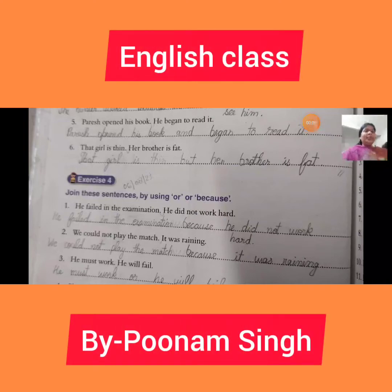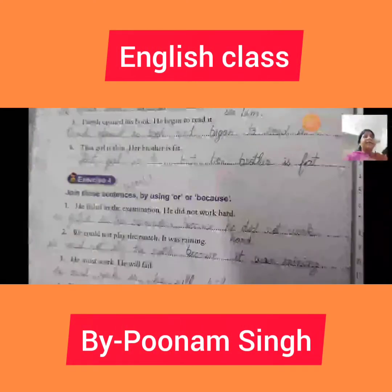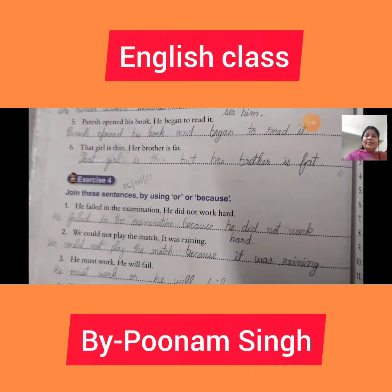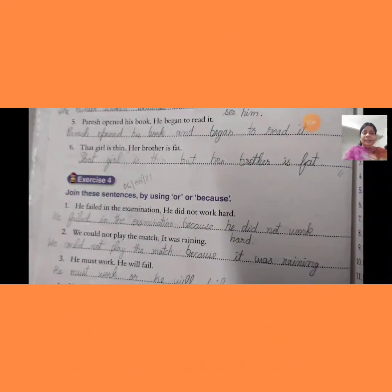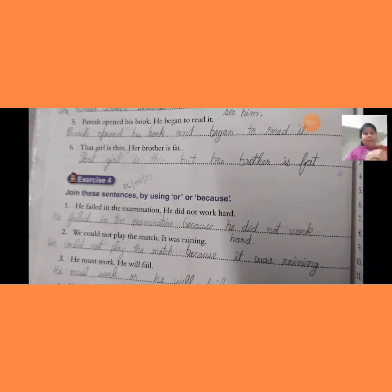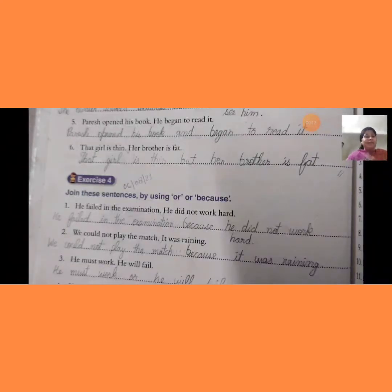Good morning, students of class 4, everyone. Take your English grammar book, open page number 44. As per schedule, we are going to read chapter number 7: Conjunctions.